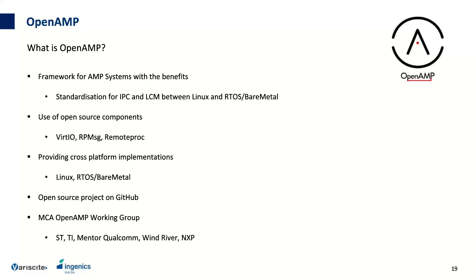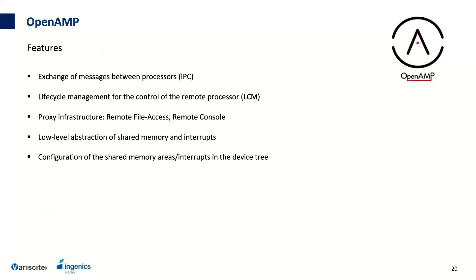OpenAMP provides a cross-platform implementation for Linux, FreeRTOS, bare metal, and SafeRTOS. It's an open-source project on GitHub maintained by the MCA OpenAMP working group, with big players including STMicro, Mentor, Qualcomm, Wind River, and NXP. Key features include: IPC for message exchange between processors; lifecycle management to control the remote processor — starting it with different firmwares; proxy infrastructure for remote file access or remote console; and a low-level abstraction of shared memory and interrupts configurable via the device tree.